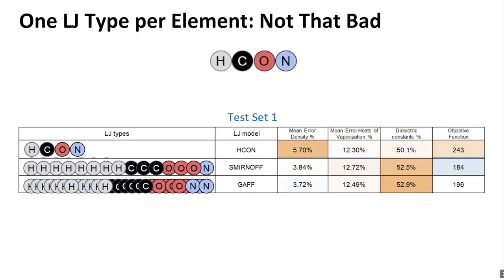Looking at the results: one simple finding is that the ridiculously simple model of one Lennard-Jones type per element is not that bad — not great, but not as bad as one might have imagined. In the table, we see model names, mean percent error on densities, mean percent error on heats of vaporization, mean percent error on dielectric constants, and an objective function summarizing error where a low number is better, with orange indicating worse and blue better. The objective function for HCON is 243; SMIRNOFF and GAFF are better, perhaps not dramatically so — heats of vaporization and dielectric constants are similar in accuracy, but densities for HCON are a little worse.